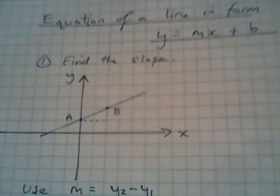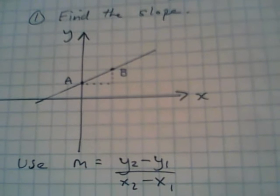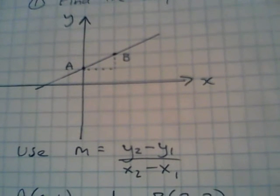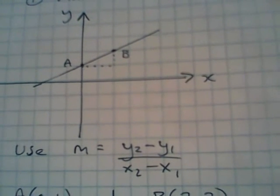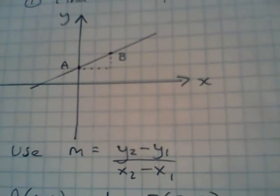The first thing you usually do here is find the slope. You've been given two points, and you can use this slope formula: y2 minus y1 over x2 minus x1, which is basically the height over the width of a triangle. That will find you your slope.